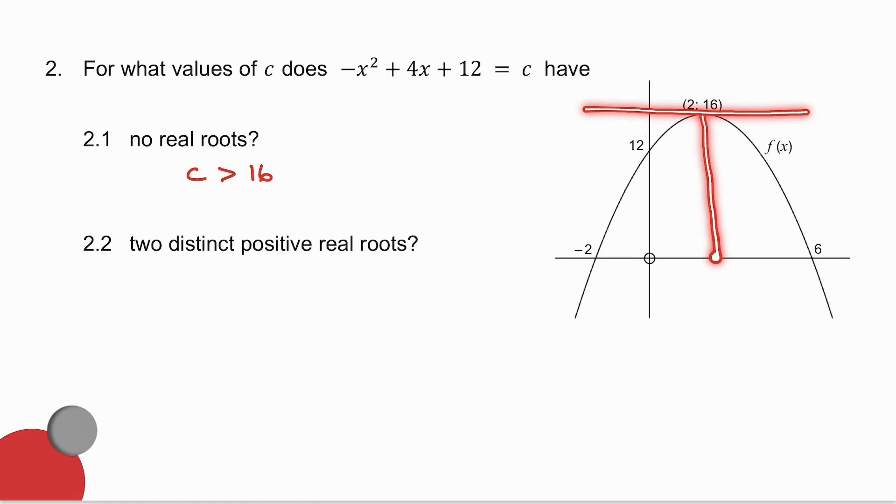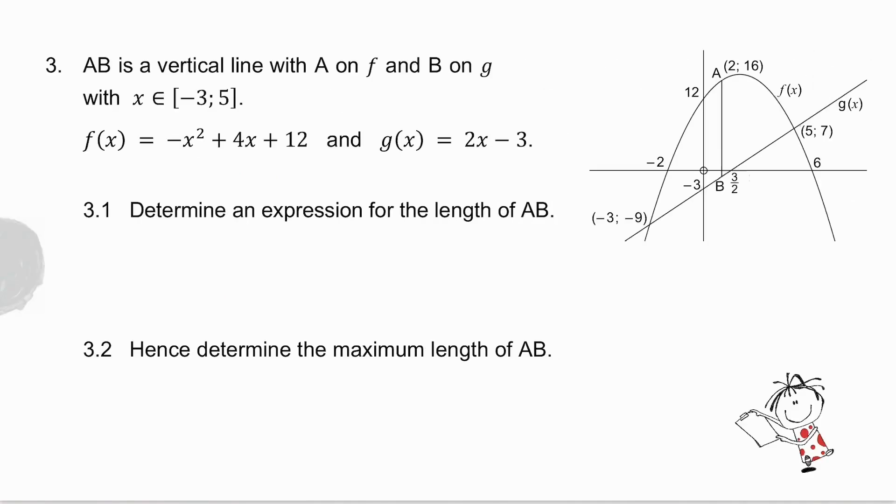Well, there, it's only cutting in one place, which is not fine. So I can have it between there and there and there. So what are my c values? C must lie between 12 and 16. I cannot include the 12 because then one of my roots was zero. I cannot include the 16 because I only have one root and not two distinct roots.